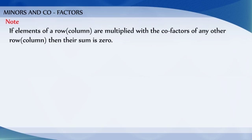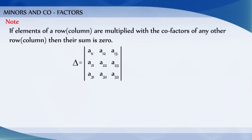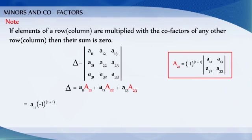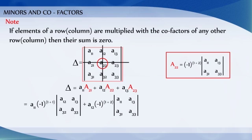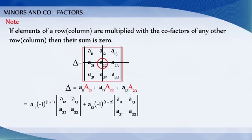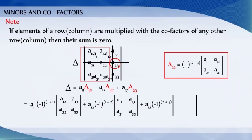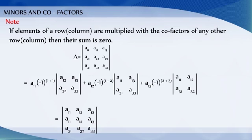Note: if elements of a row or column are multiplied with the cofactor of any other row or column, then their sum is 0. For example, a11 times A21 plus a12 times A22 plus a13 times A23 equals 0. This is because expanding using these cofactors effectively creates a determinant with two identical rows, R1 and R2, and since R1 and R2 are identical rows, the determinant equals 0.